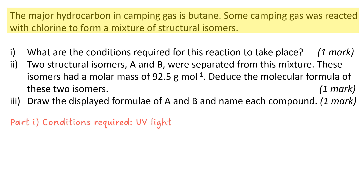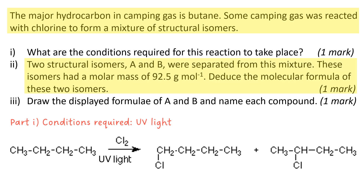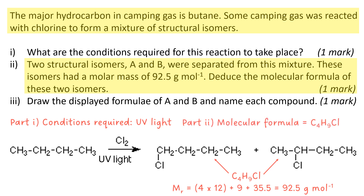Two structural isomers A and B were separated from this mixture and they had a molar mass of 92.5 grams per mole, and they want you to deduce the molecular formula of these two isomers. The first thing to do is to substitute one of the hydrogens in butane with chlorine. These are the monosubstituted products, and each of them adds up to C4H9Cl. Adding up all of the relative atomic mass values gives 92.5 grams per mole, so the molecular formula is C4H9Cl.